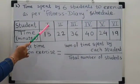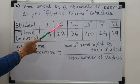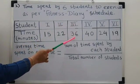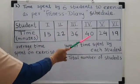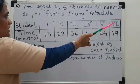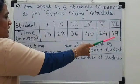time spent by first student is 15 minutes. Second student is 22 minutes. Third student is 36 minutes. Fourth student is 40 minutes. Fifth student is 24 minutes. Sixth student is 19 minutes.